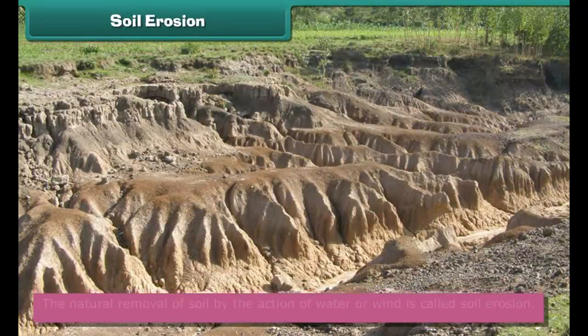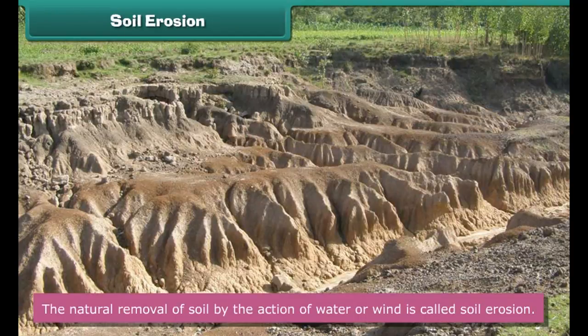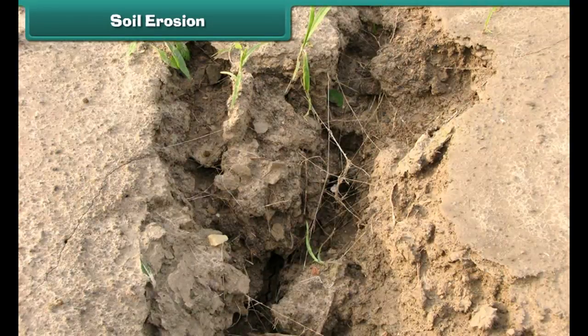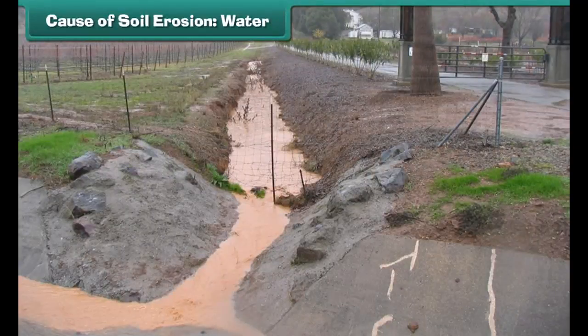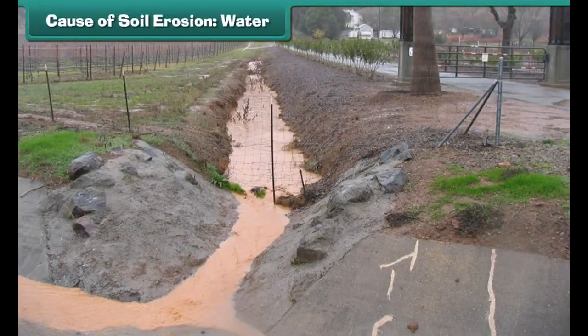Come, let us learn about it. The natural removal of soil by the action of water or wind is called soil erosion. Look at the images - the disappearance of topmost surface and large ditches in the ground are the signs of soil erosion.